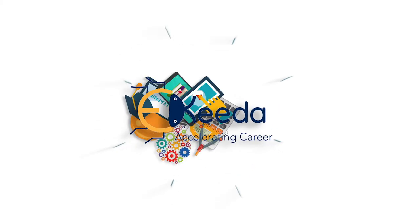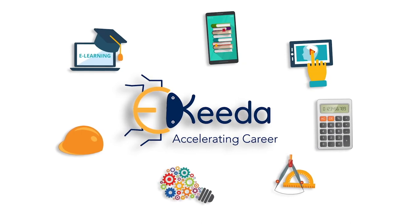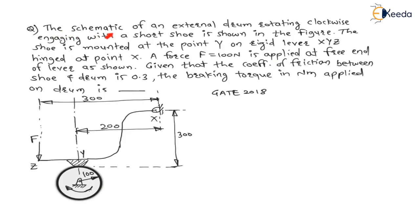The schematic of an external drum rotating clockwise with a short shoe is shown in the figure. This is an external drum rotating in clockwise direction. The shoe is mounted at a point Y on a rigid lever XYZ, and at Y there is a shoe externally connected with the brake drum.